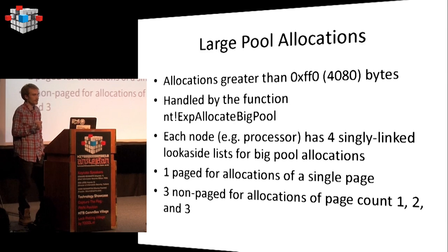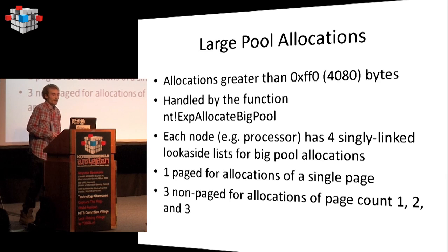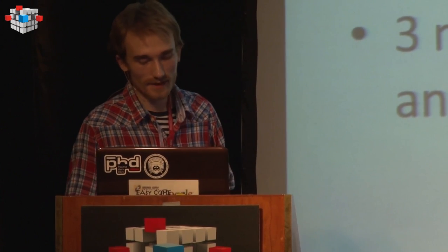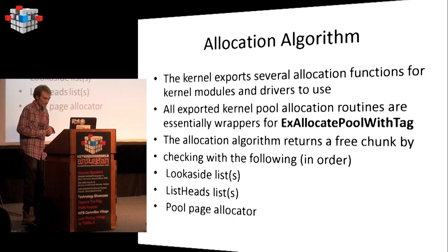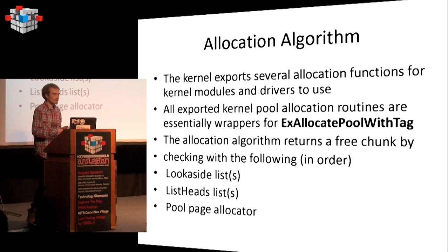For large allocations bigger than page size, there is a mechanism for allocating pages with special lists for one-page, two-page, and three-page allocations. If a bigger allocation is requested, there is a bitmap describing which pages are allocated and which are free. There are a lot of functions to allocate memory in kernel land, but in the end they all invoke ExAllocatePoolWithTag — it's the one and only interface for allocating memory.